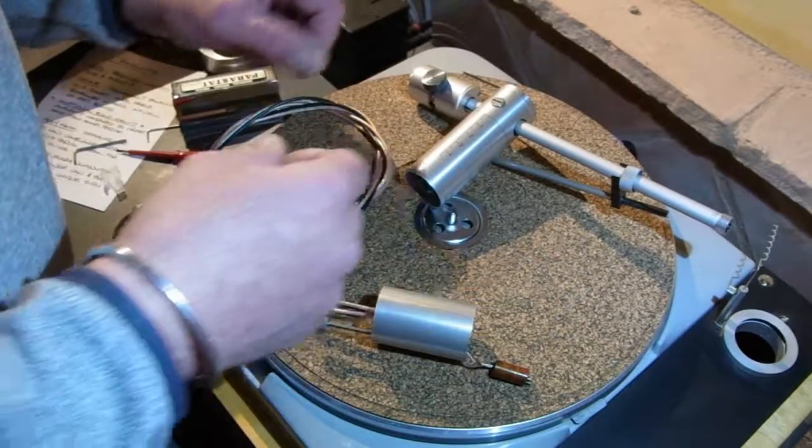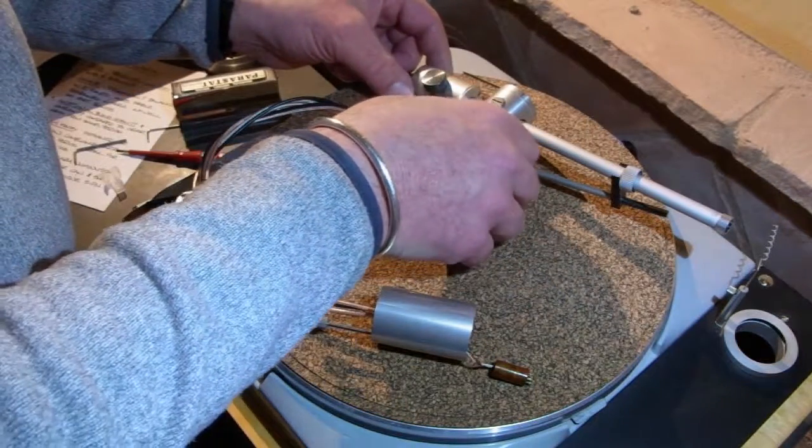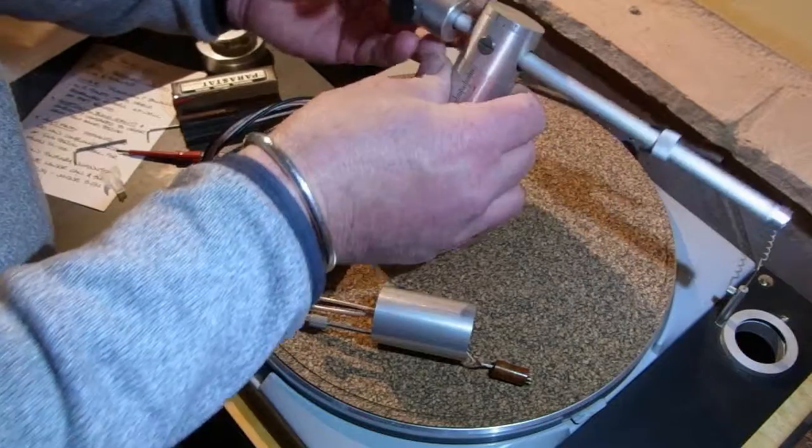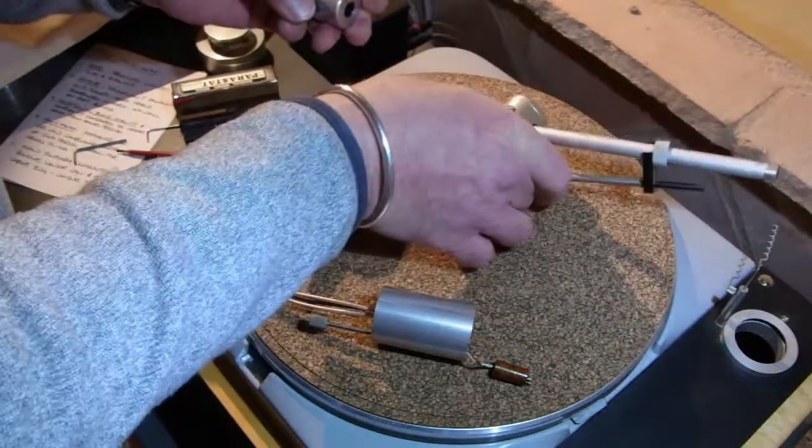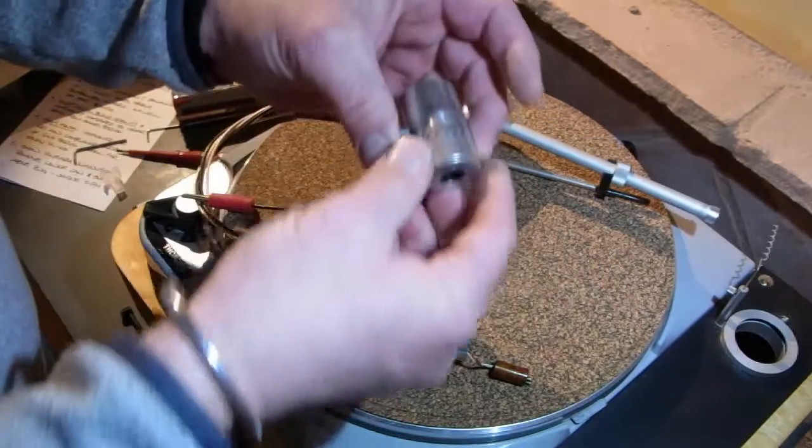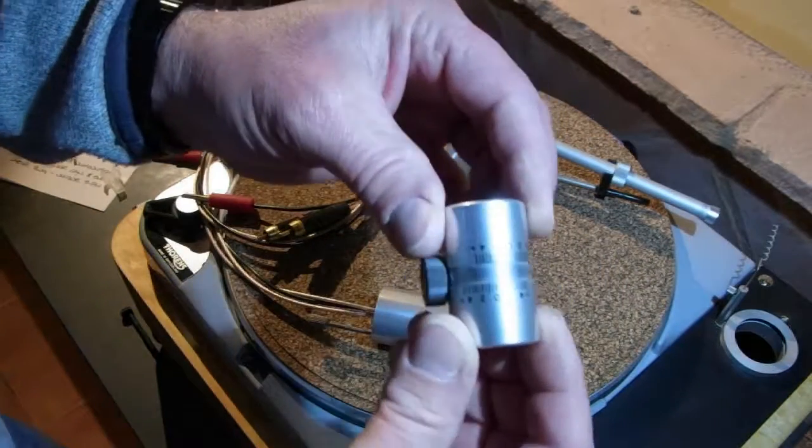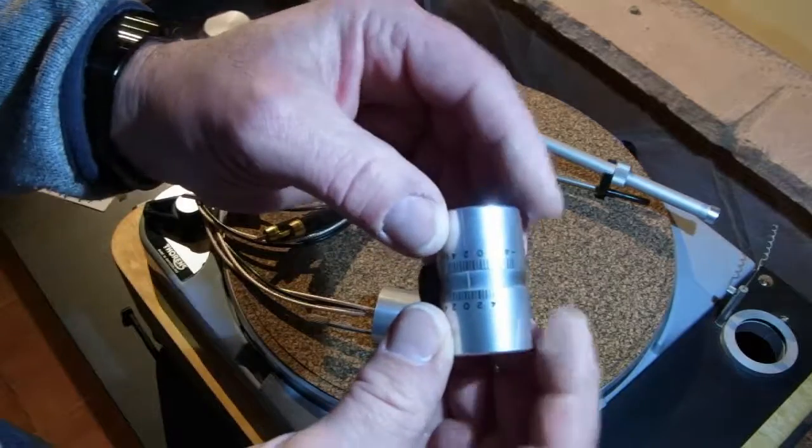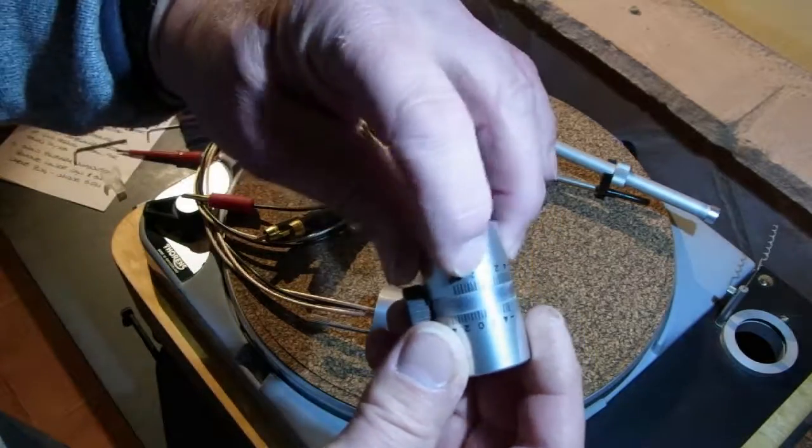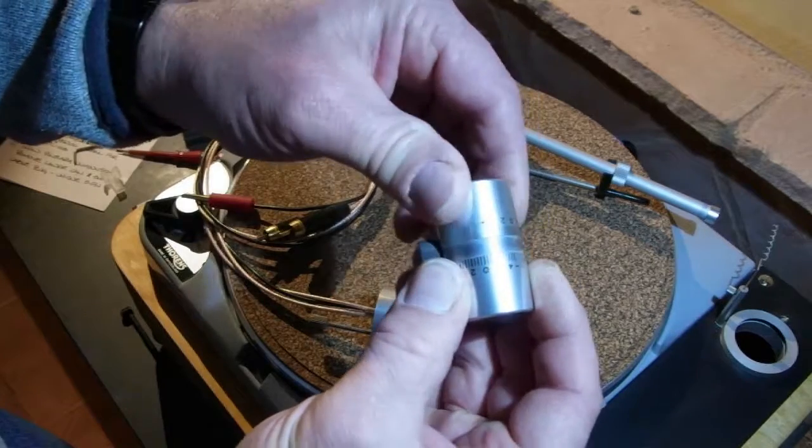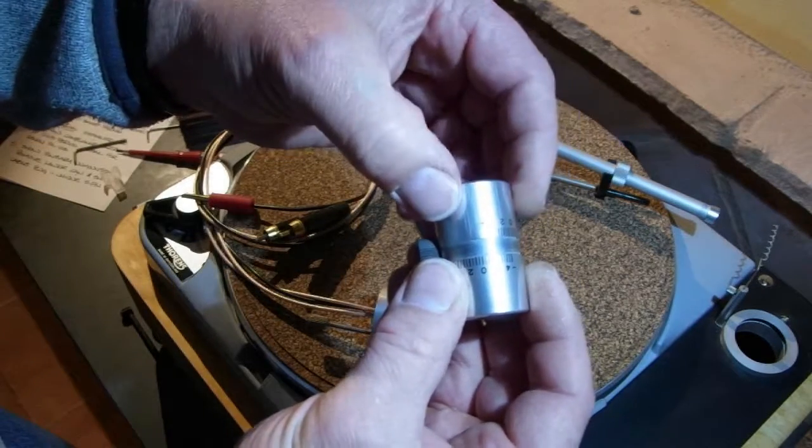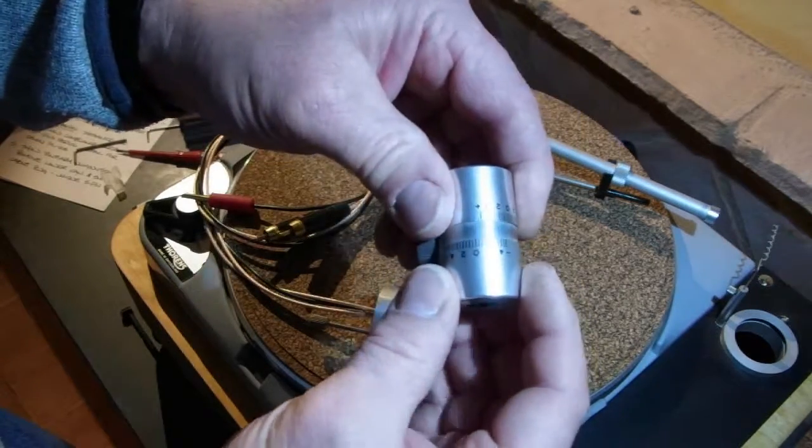Now we'll take a closer look at the P77 tonearm. First, as I mentioned earlier in the video, this tonearm has a rather special counterweight. As you can see here, both ends of the counterweight have caps which have graduated markings on them.